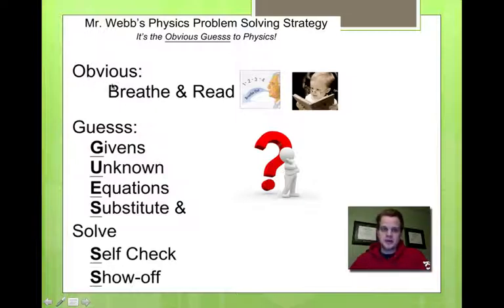The obvious thing to do: first, breathe before you even read the problem. Go ahead, take a breath, and then read the problem. Later on, you're going to write down the givens, figure out what the unknown is or what you're looking for, figure out what the right equation to use is, substitute the right numbers into the equation, and then solve. You do the self-check and then you show off. Okay, so that's the quick version. Let me show you a little bit more in detail.